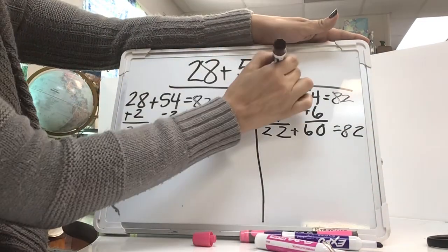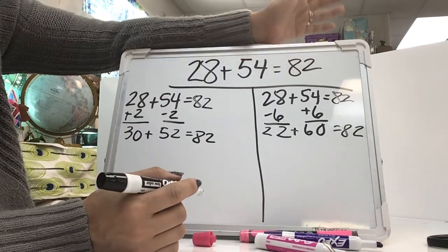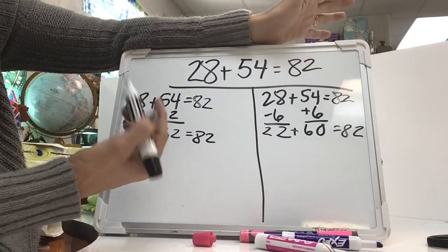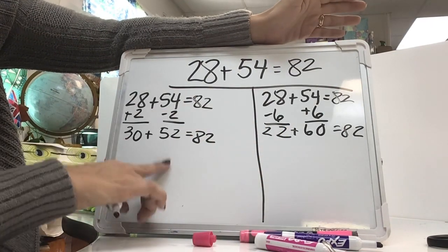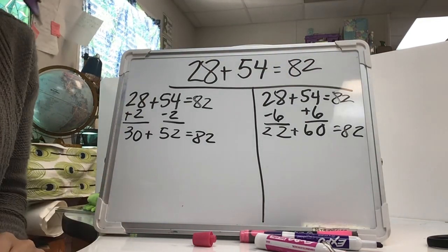So some of your equations for your test and also your quiz are going to say show it in two different ways. Here are two different ways. They both are giving you the same answer, the same sum. And that's how you do compensation.